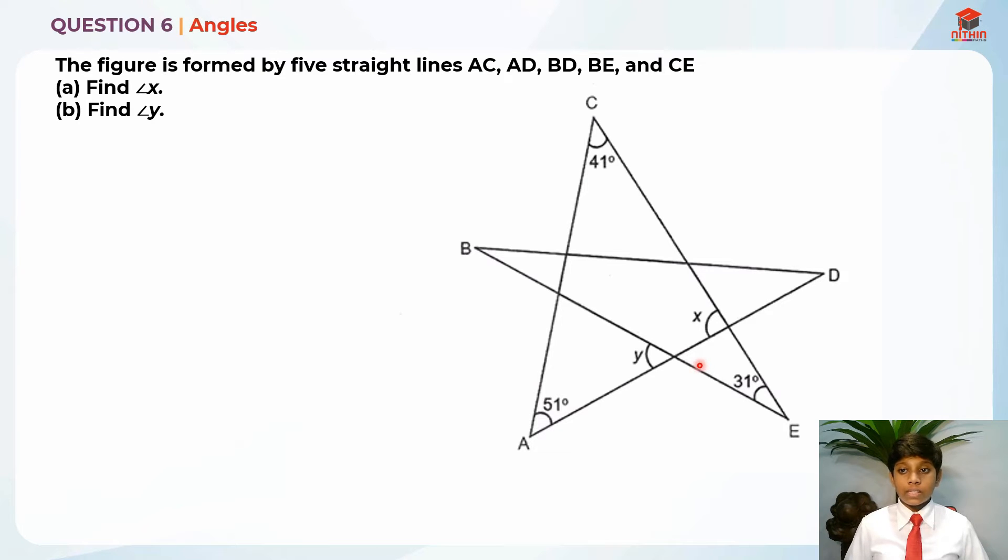This is question 6 and this question is testing us on angles. This question has two parts, part A and part B. Let's read the question for part A first. The figure is formed by five straight lines: AC over here, AD over here, BD over here, BE, and CE over here.